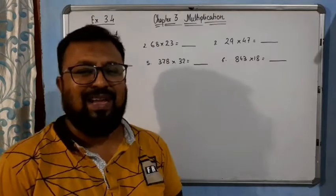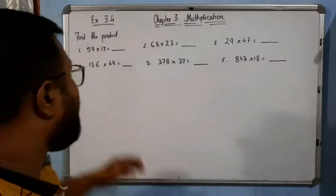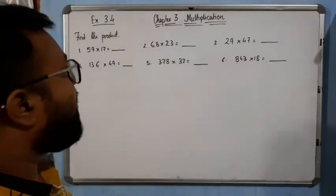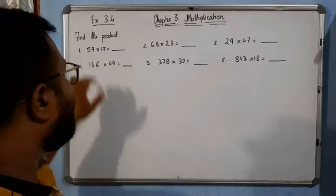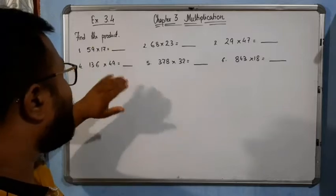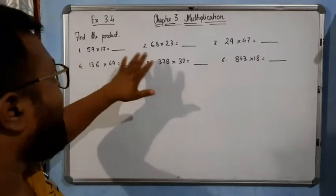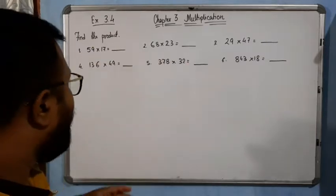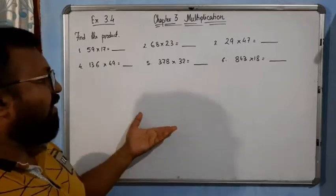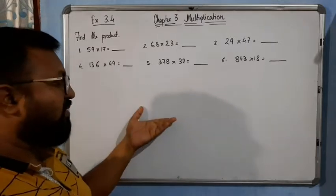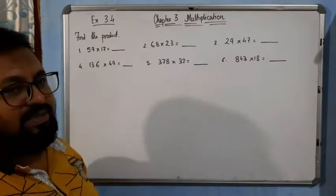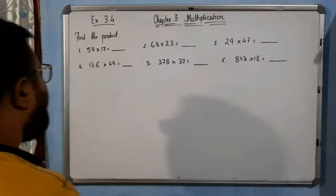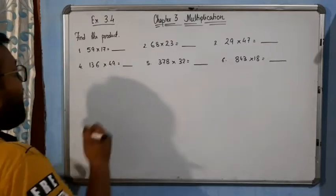Hello students, now come to the next exercise — Exercise 3.4, Chapter: Multiplication. Find the products here. Some examples and questions are given. In your book there are 12 examples and questions, and I have opted only 6, so the rest you can do by yourself. Now see how we will solve this one.